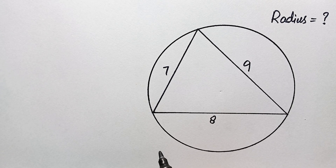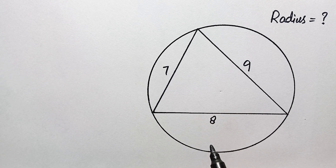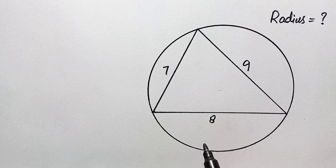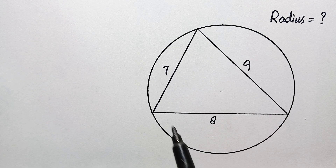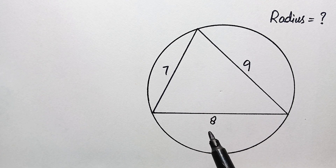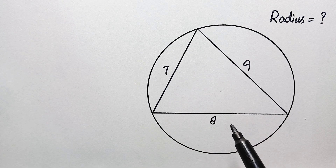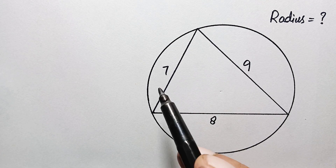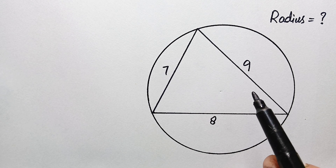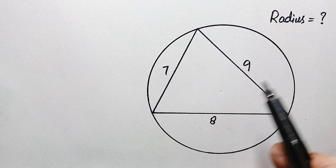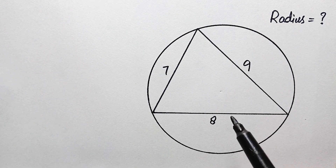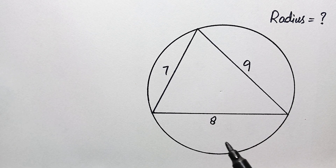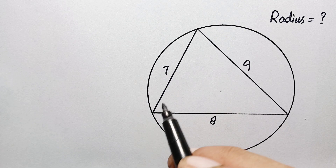Hello everyone, you are welcome. Today we have a new interesting geometry math problem. We have a circle and there is a triangle inside the circle whose three side lengths are given, and we have to find out the radius of this circle. Now how can we solve this beautiful geometry math problem?